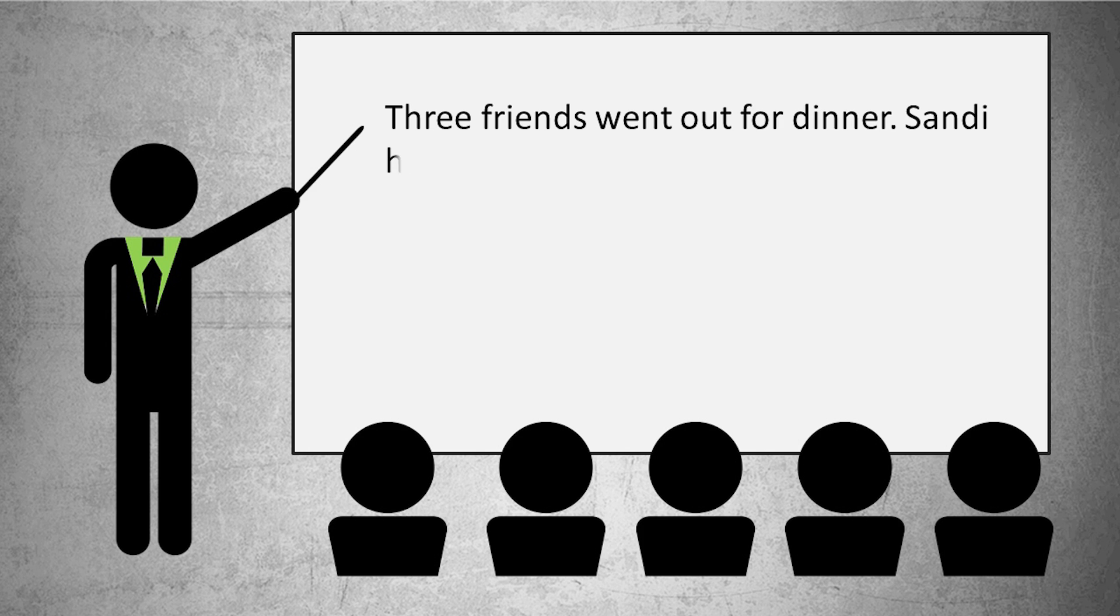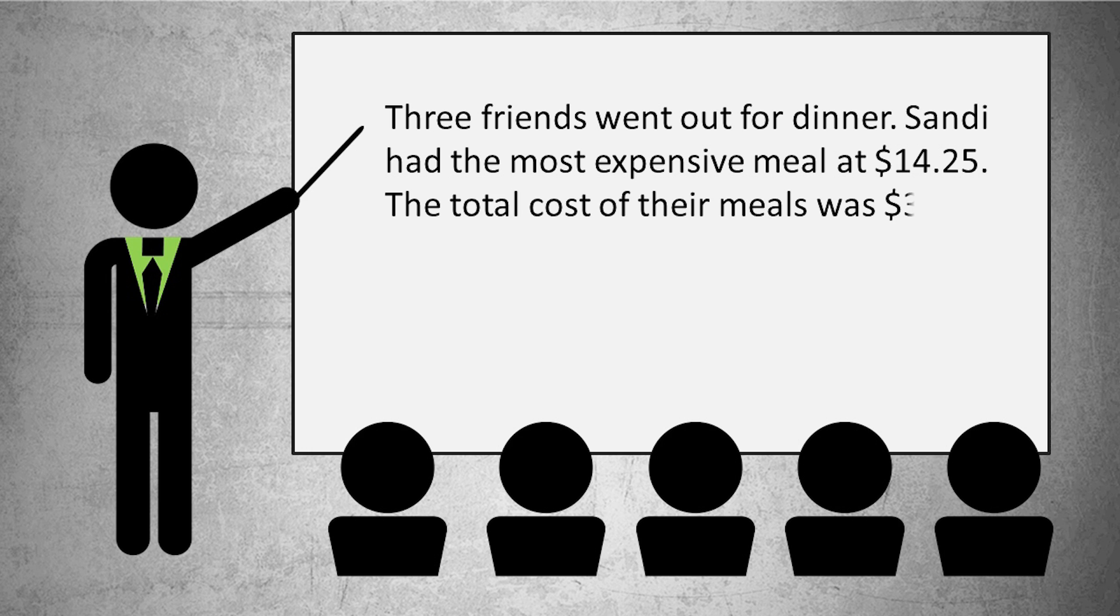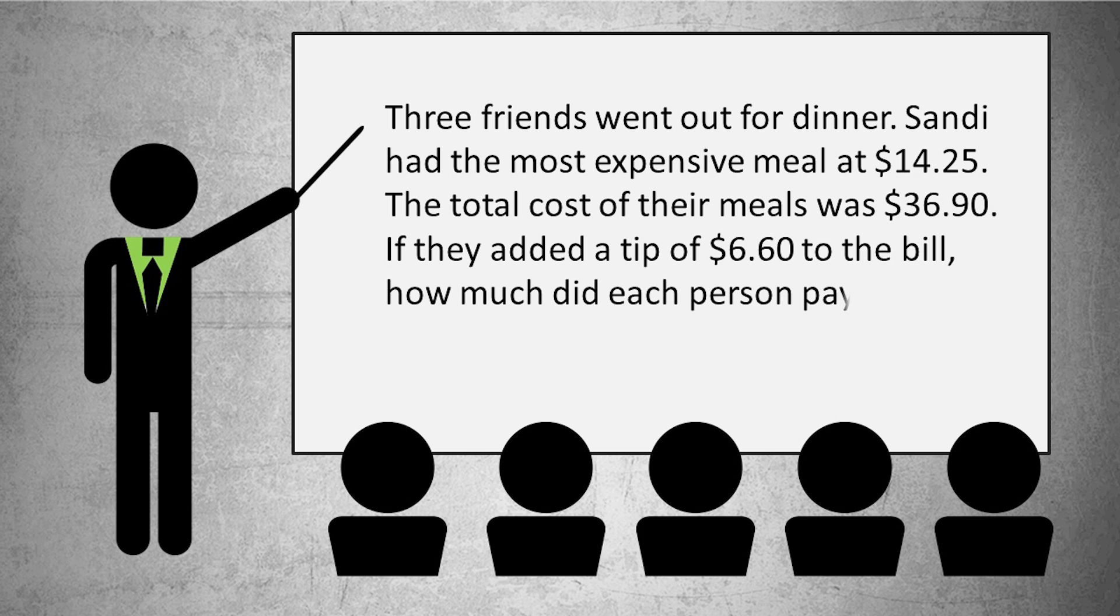Three friends went out for dinner. Sandy had the most expensive meal at $14.25. The total cost of their meals was $36.90. If they added a tip of $6.60 to the bill, how much did each person pay if they divided the total amount equally?